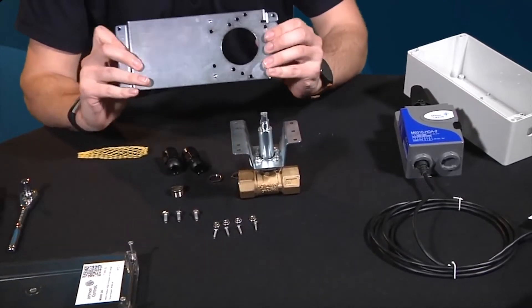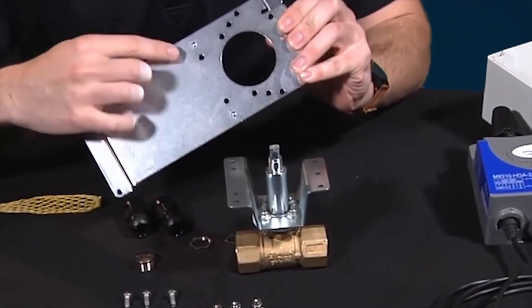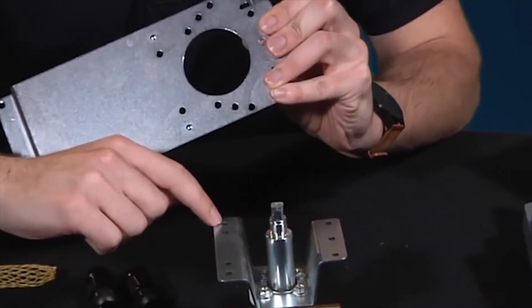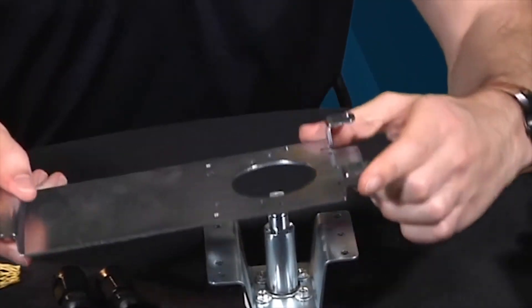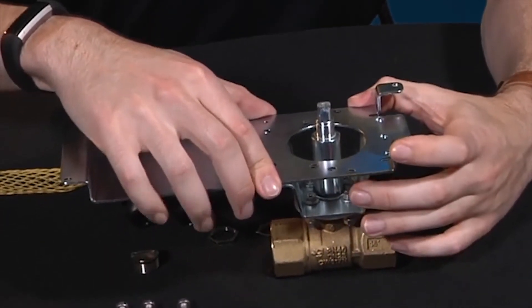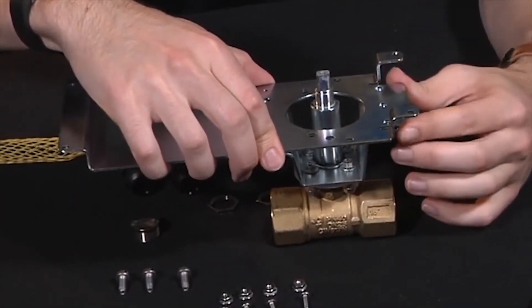Next, we'll want to install the mounting plate. Now this has two indented features on the plate that will align into the holes on the mounting bracket. Ensure you align the plate onto the mounting bracket before you proceed with the next step.